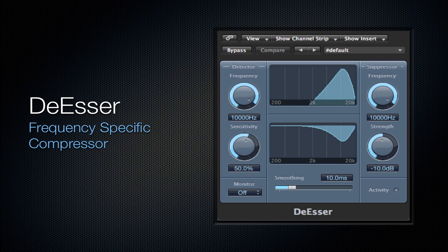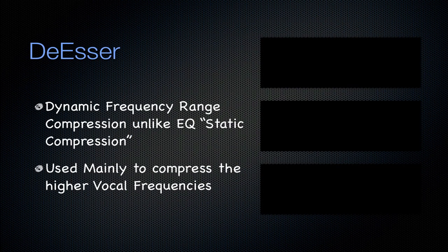Next is the de-esser. It's a frequency-specific compressor — dynamic frequency range compression, just like the compressor and unlike the static EQ. It's used mainly to compress the higher vocal frequencies. The higher vocal frequencies are where the de-essing comes from: the S sounds. You can compress those frequencies just a little bit so that they're not so harsh in your ears. I find myself using this all the time on almost every single vocal track.